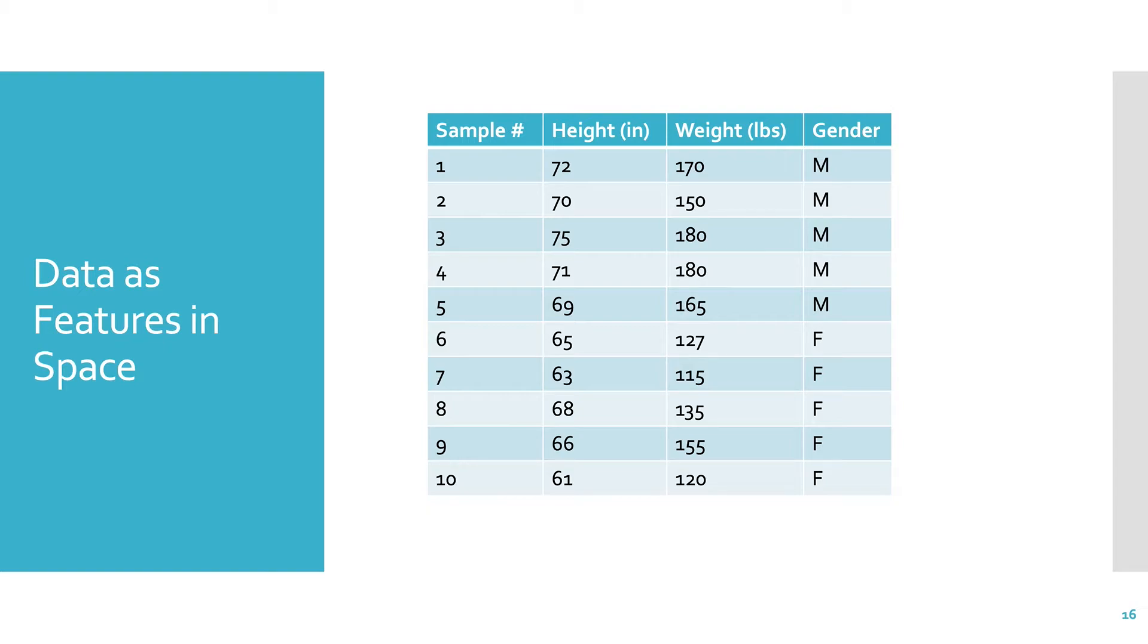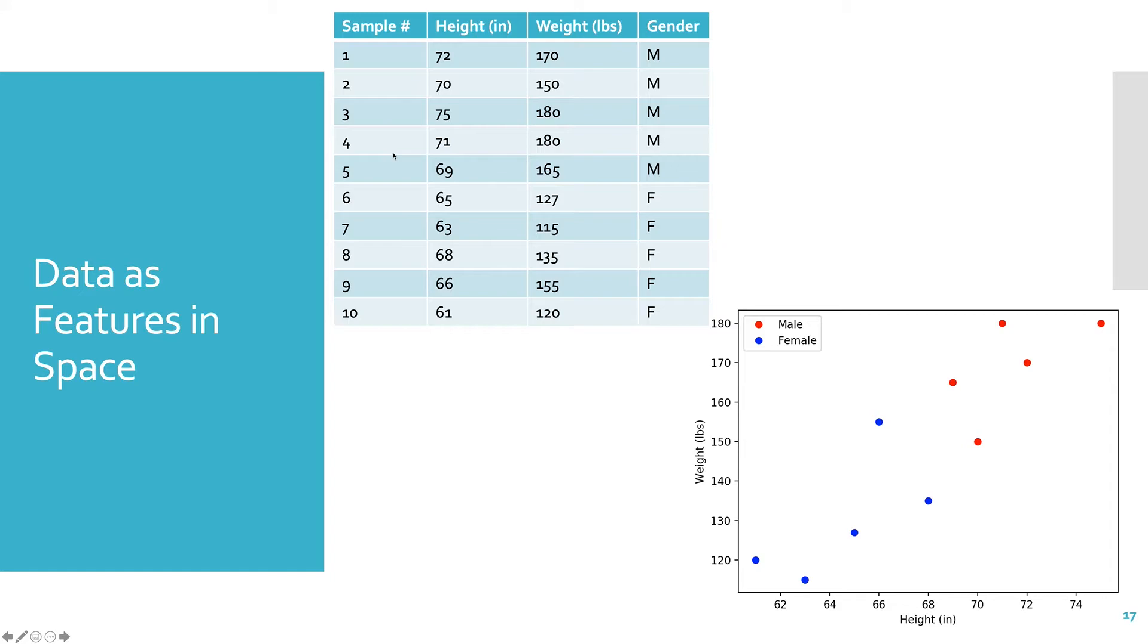So again, we're going to be treating data as features in space. So now we have all these samples, and they're represented by these feature values, and this is the feature vector. So as features in space, we can actually plot these. So this is two-dimensional.